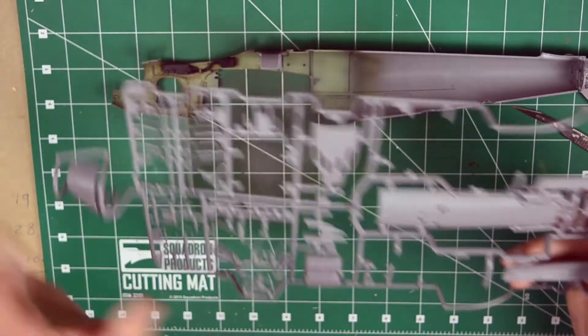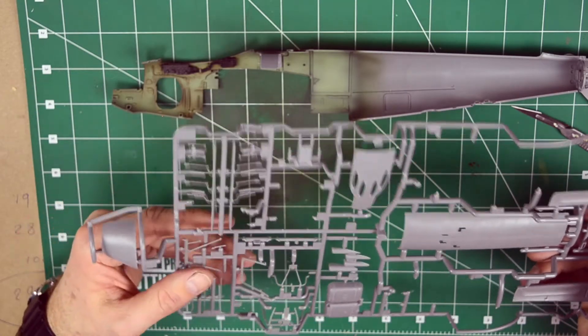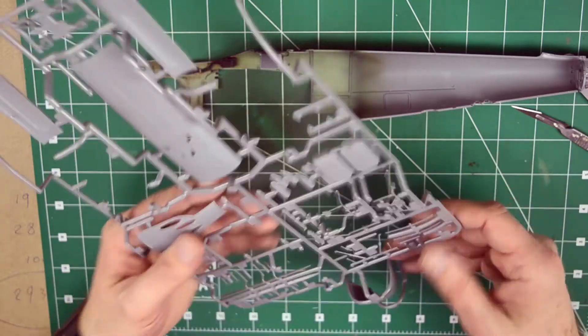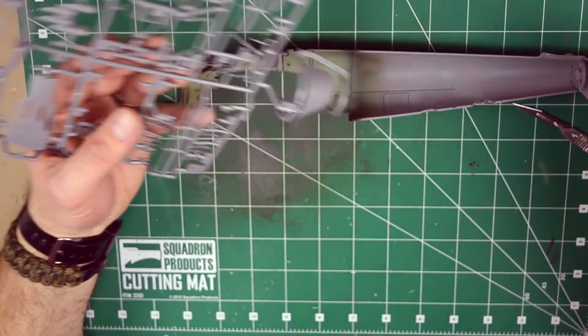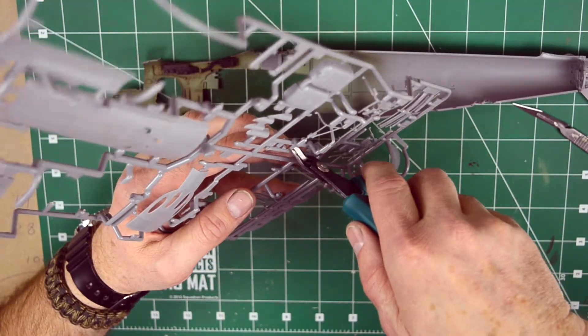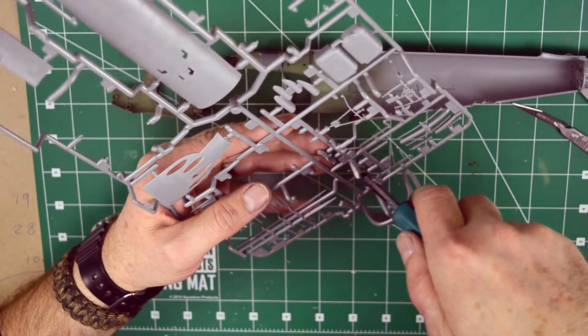All we need to do is glue a couple of brackets in place before we can close the fuselage all together. Let's make sure we get everything lined up.